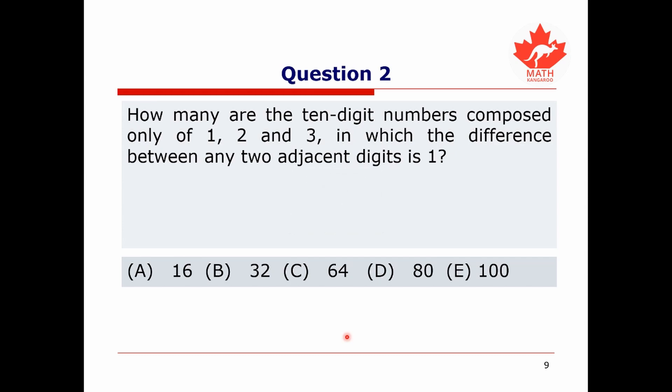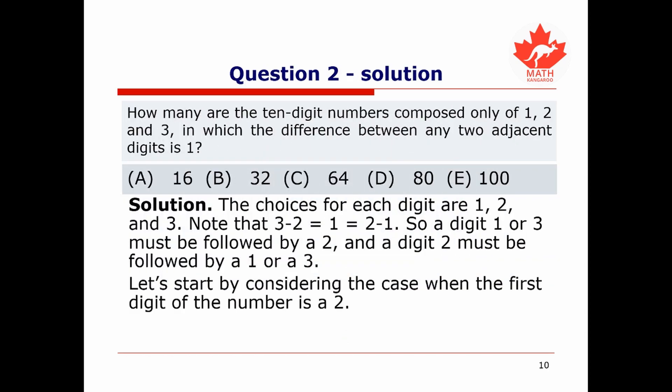Let's now move on to the second question, which asks: how many 10-digit numbers composed only of 1, 2, and 3 have the property that the difference between any two adjacent digits is 1? The choices for each digit are 1, 2, or 3, and we need adjacent digits to differ by exactly 1.